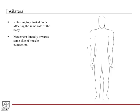Ipsilateral describes what side other structures are in relation to the one you're focusing on. For example, the right arm is ipsilateral to the right leg — they're both on the same side of the body.